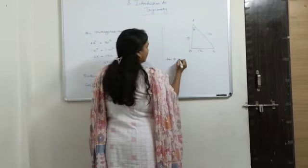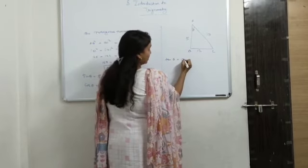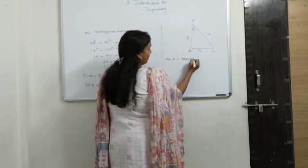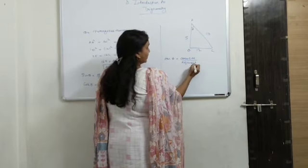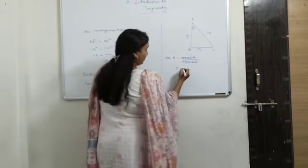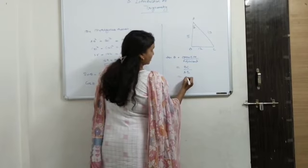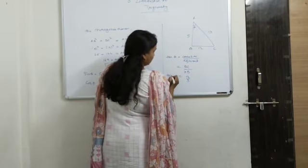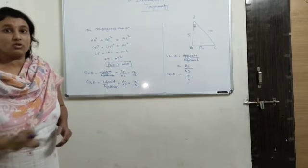Tan theta is equal to, so what is tan theta? Opposite upon adjacent. So, it is equal to, what is opposite side to theta? BC. And AB is its adjacent side. So, it is 12 upon 5.